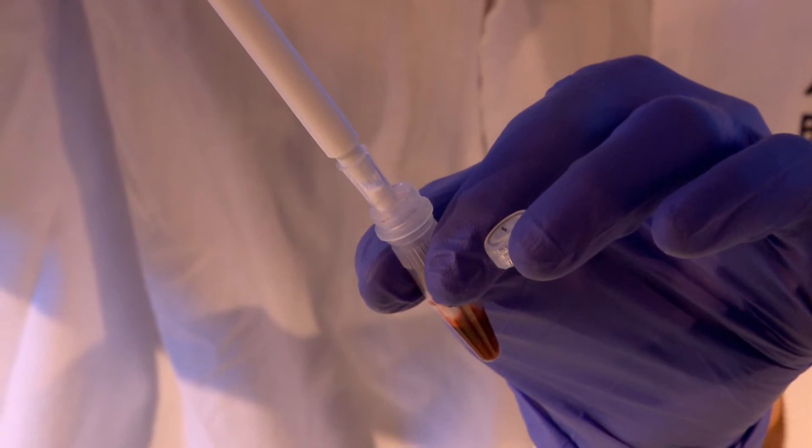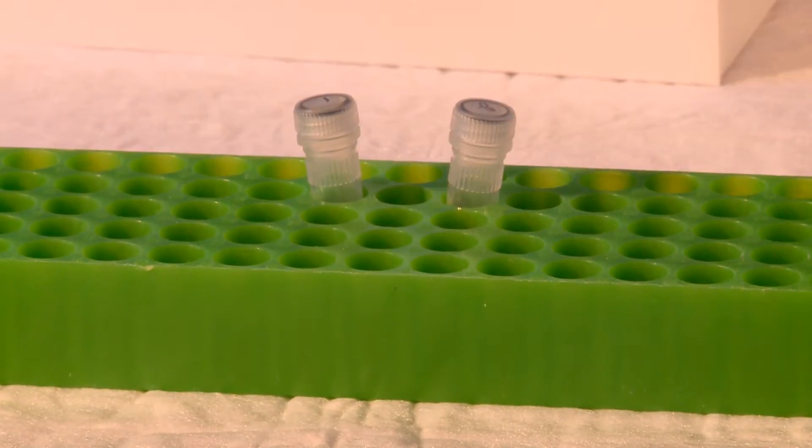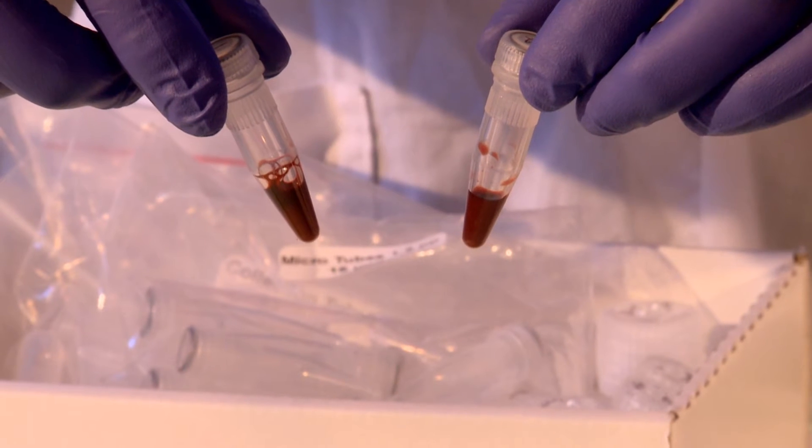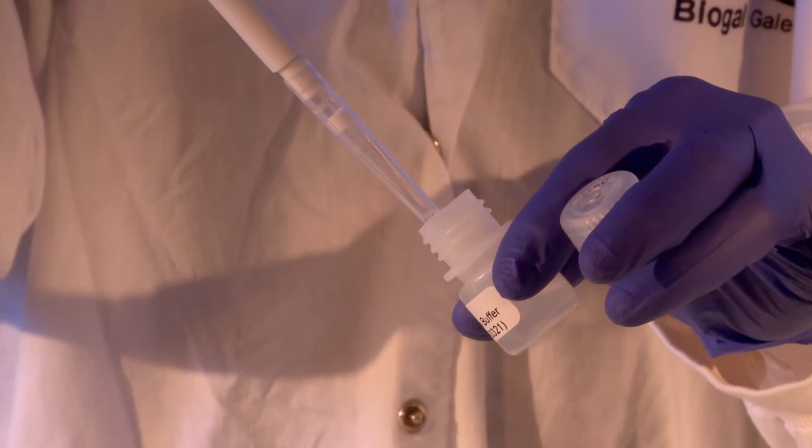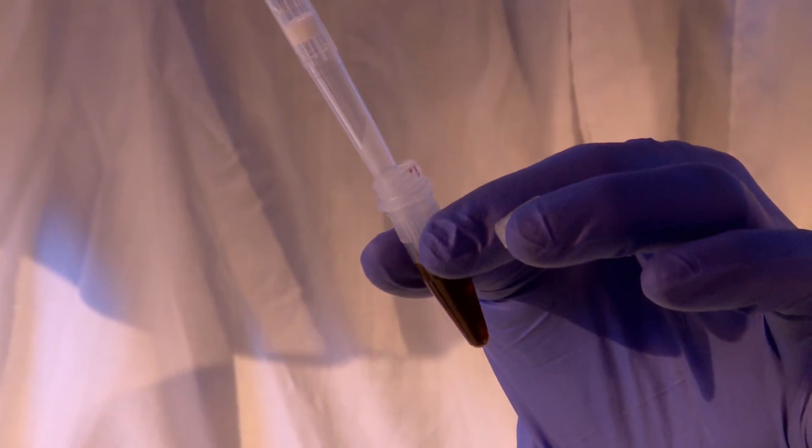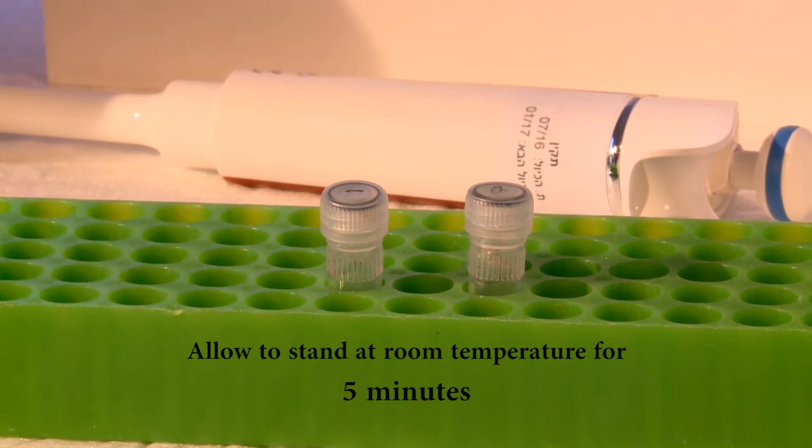Here we will demonstrate the extraction of DNA from whole blood collected in EDTA. Add 100 microliters of blood to a microtube. Add 400 microliters of buffer A to the blood sample and mix well. Allow it to stand at room temperature for 5 minutes.